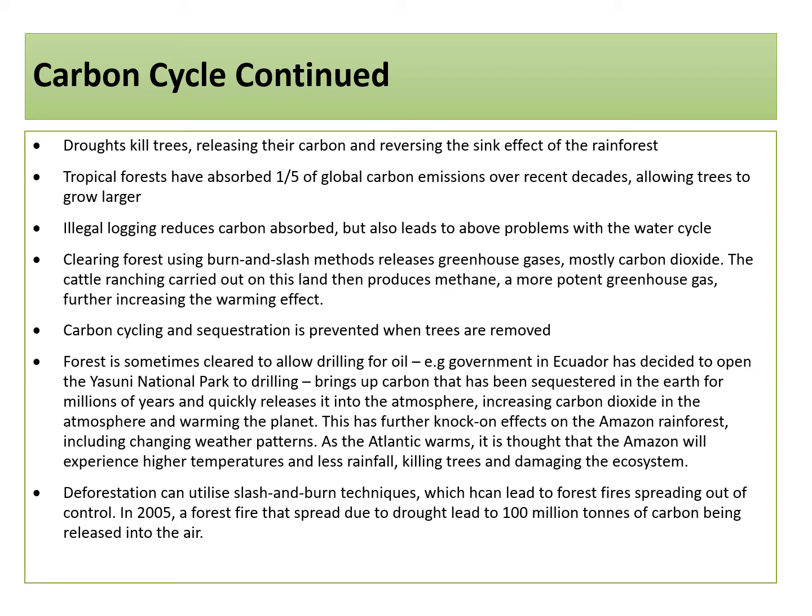Carbon cycling and sequestration is prevented altogether when trees are removed and can no longer photosynthesise. Forest is sometimes cleared to allow drilling for oil, such as the government in Ecuador opening the Yasuni National Park to drilling. This brings up carbon that has been sequestered in the earth for millions of years and quickly releases it into the atmosphere, increasing carbon dioxide in the atmosphere and so warming the planet. This has further knock-on effects on the Amazon rainforest, including changing weather patterns.